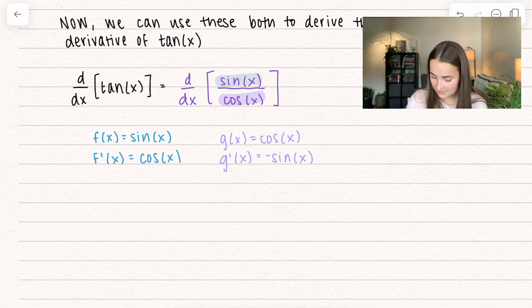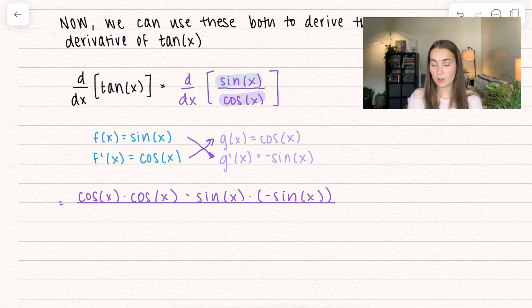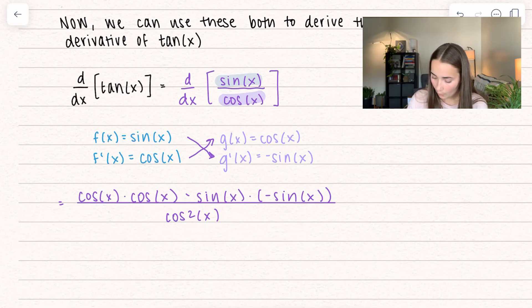I'm going to take the actual derivative. I start low to high and then I subtract high to low. This is going to be all over the denominator squared so we get cosine squared of x. I'm going to multiply this through.